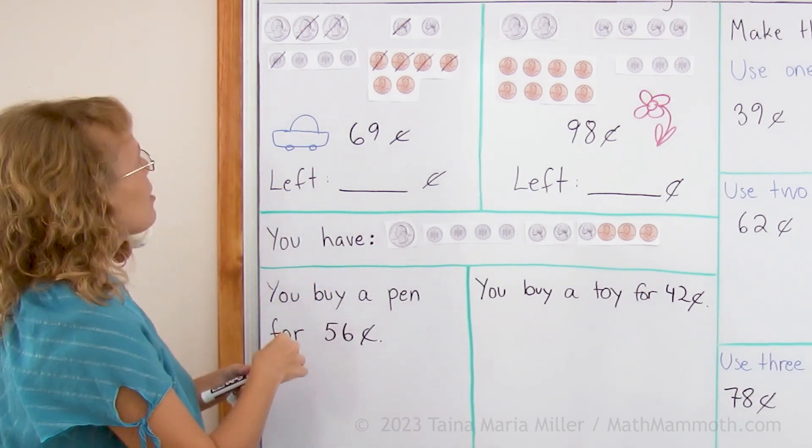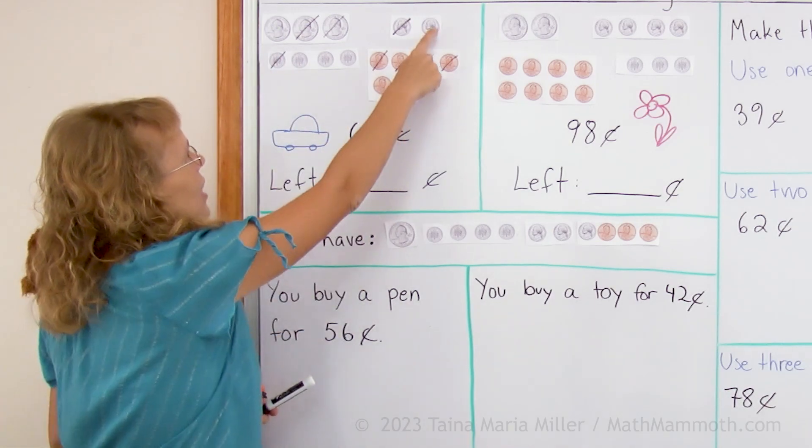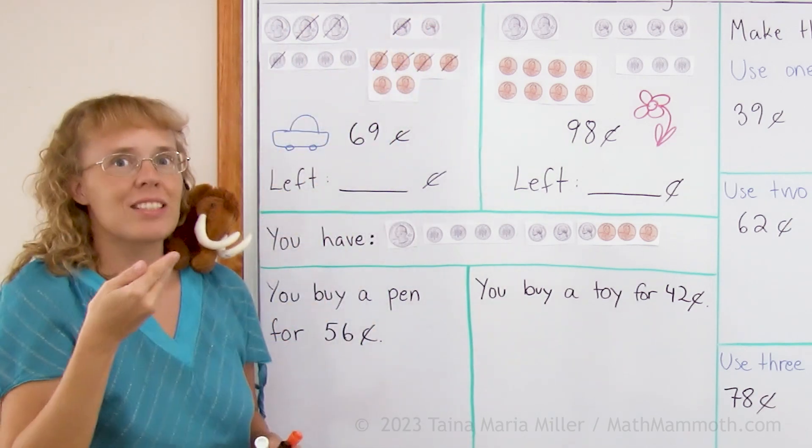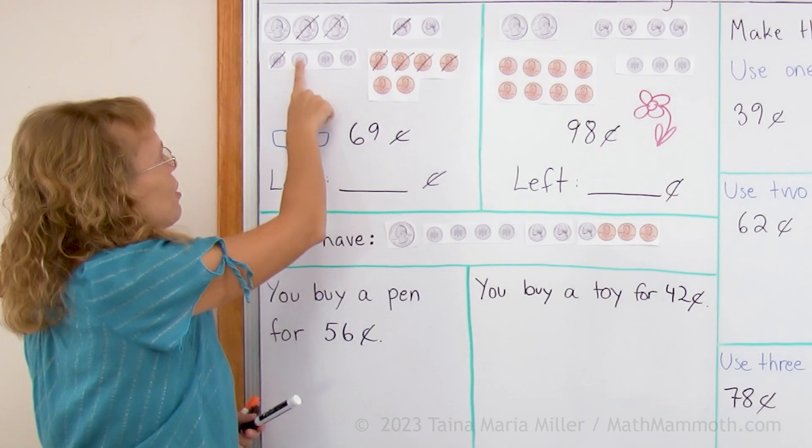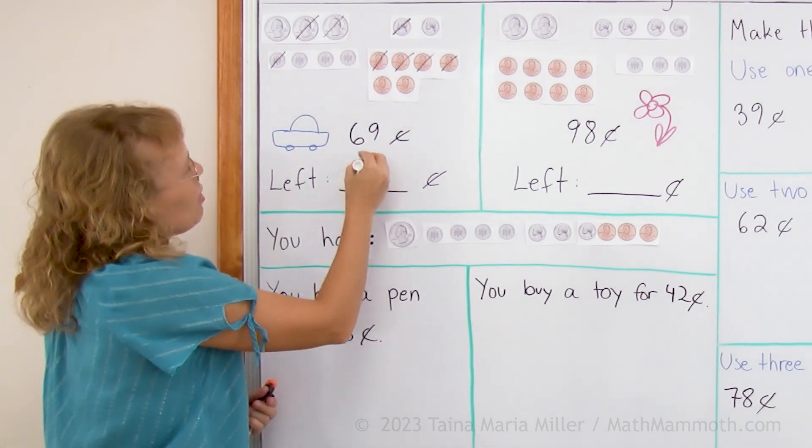So what is left now, we can figure that out. You have a quarter, that's 25. And then let's add the one nickel from there, 25 and 5 makes 30. And then these 10s, 40, 50, 60 and 2, 62 cents left.